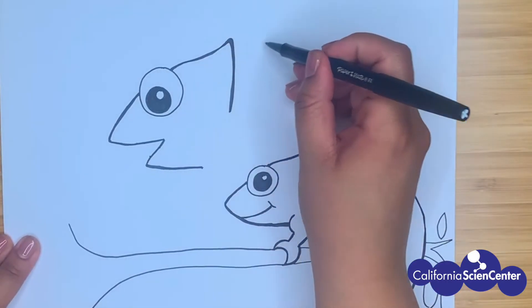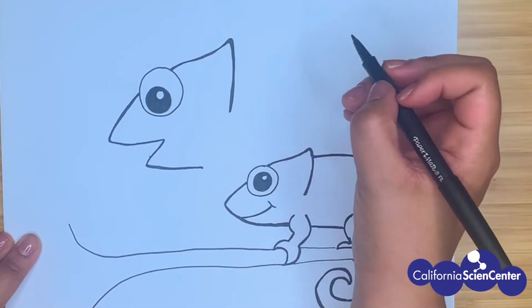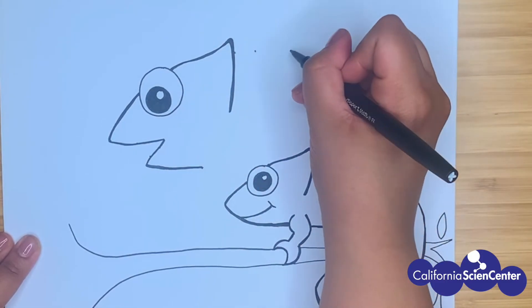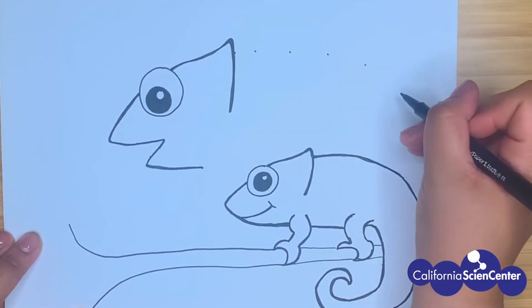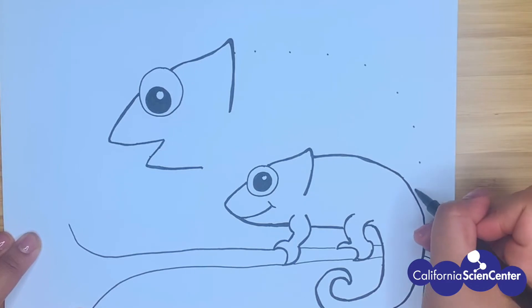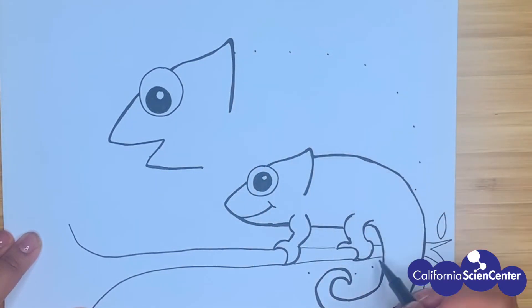Mama chameleon also has her amazing tail. But since baby chameleon's in our foreground, when we draw her tail, we have to imagine it behind baby. Drawing these dots helps us to see what we can't see.